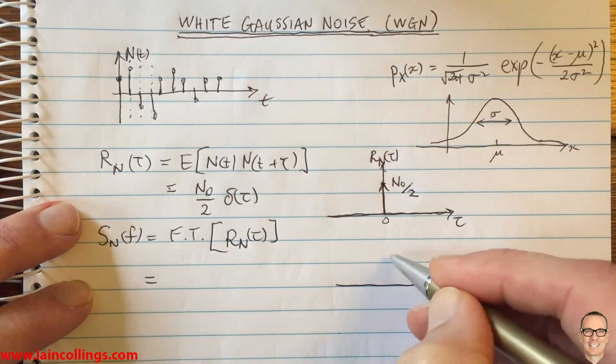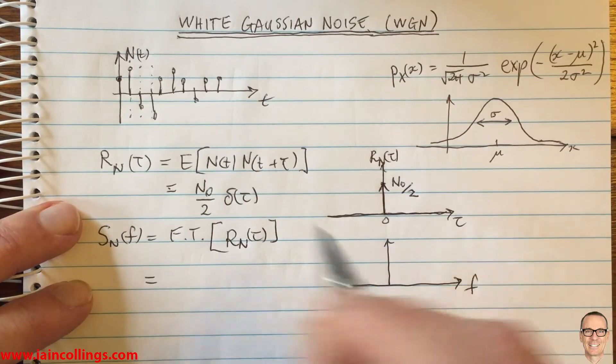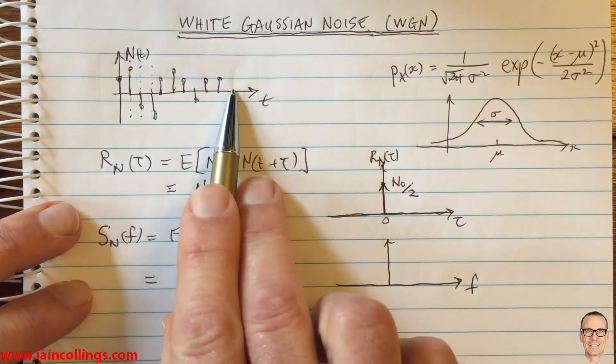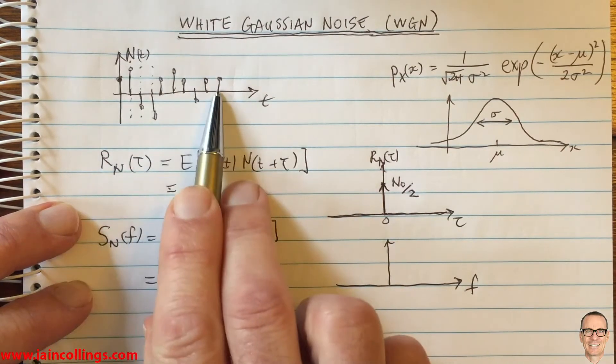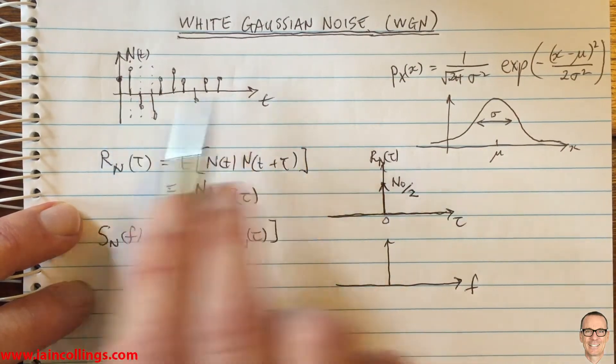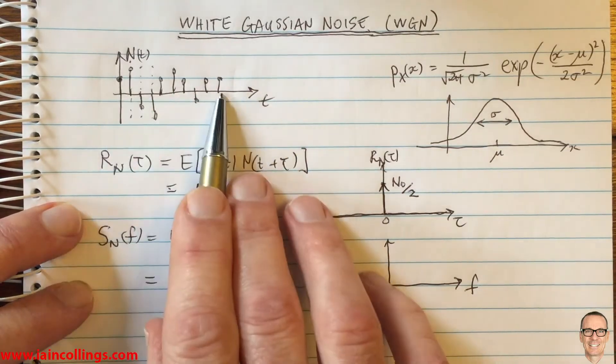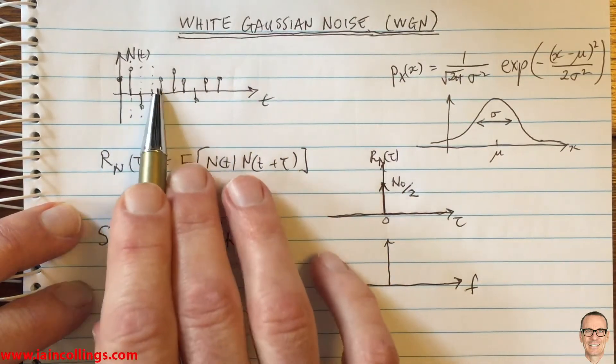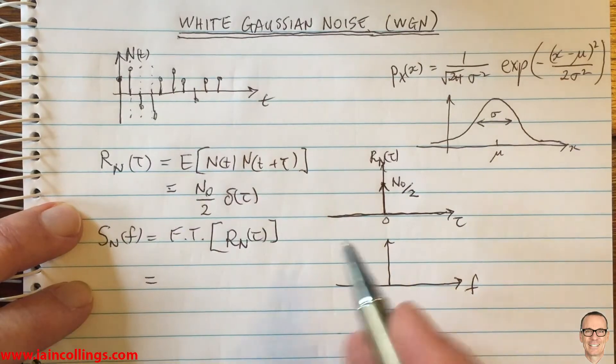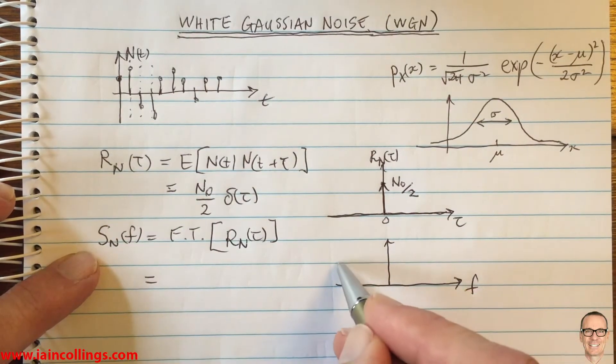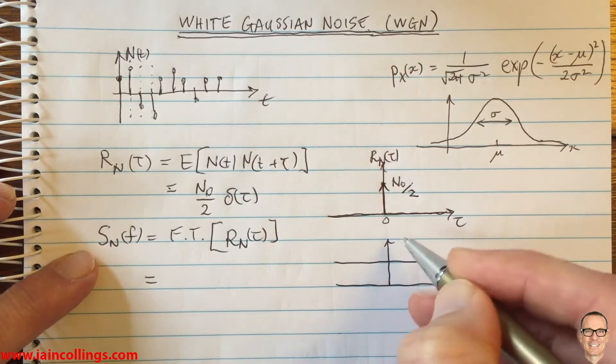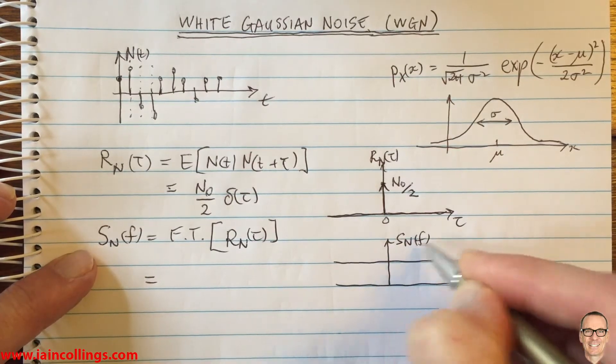If we're thinking of noise in the frequency domain - this was in the time domain, a random process - we can't take the Fourier transform of that random process for every single realization because there's just so many realizations, because every single time is a random variable. But we can do it on average, and that's what the power spectral density is.